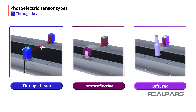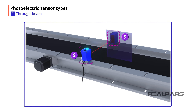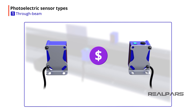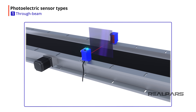Through-beam photoelectric sensors have a longer detection range than retro-reflective and diffused photoelectric sensors. This is because the light only has to travel in one direction to get from the emitter to the receiver. Some disadvantages of using a through-beam sensor are: they cost a little more, they require more room to mount correctly, and they do not detect thin clear objects well. Through-beam sensors cost more because they have two components that require two cables and two mounts, which is also why they take up more space. They do not detect thin clear objects because the light can travel straight through the object to the receiver.